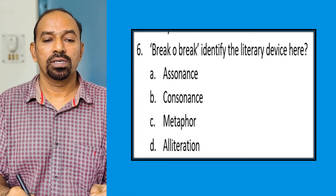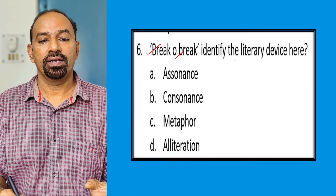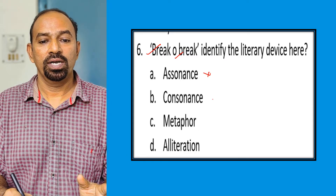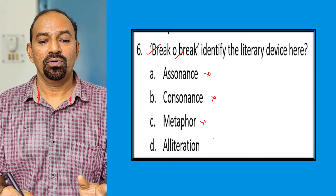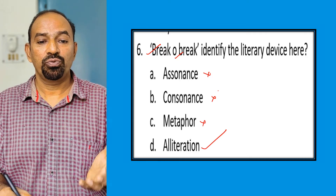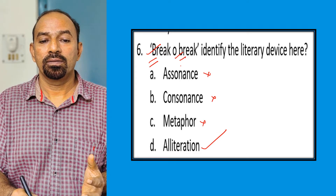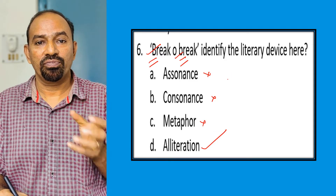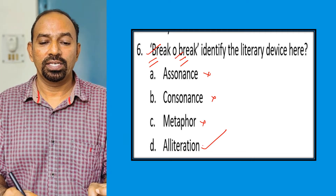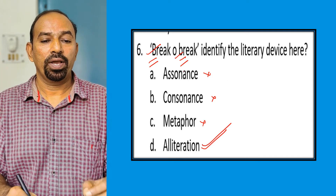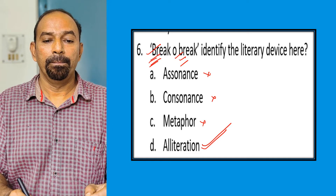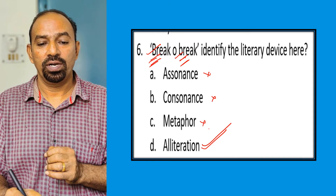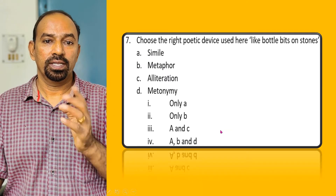Question six: Identify the literary device in 'brick, O brick'. The options are assonance, consonance, metaphor, and alliteration. Alliteration is the answer. When the beginning consonant sound is repeated in a particular phrase or line, it is called alliteration. In 'brick O brick open', the B sound is repeated — that repetition of consonant sounds at the beginning is alliteration.